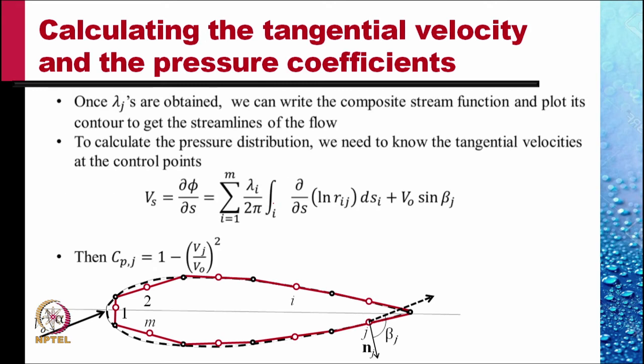Once lambda j's are obtained, we can write the composite stream function and plot its contour to get the streamlines of the flow. To calculate the pressure distribution, we need to know the tangential velocities at the control points. Then the coefficient of pressure at the jth control point is 1 minus (v j by v naught) squared.